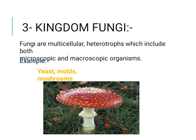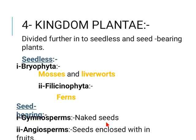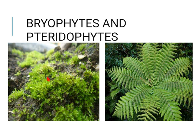The fourth kingdom is Kingdom Plantae. Whittaker classified all organisms that can photosynthesize, prepare their own food, and are eukaryotic into this kingdom. Plants are divided into seedless plants and seed-bearing plants. In seedless plants we have bryophytes and pteridophytes. Bryophytes need moisture and do not have true roots, stems, or leaves. Pteridophytes are called ferns and share similar characteristics.